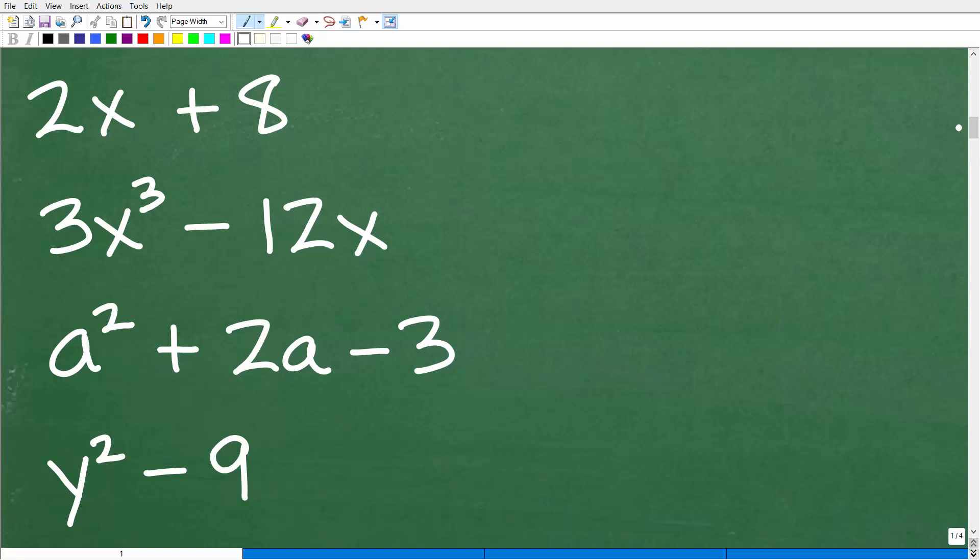This is just a quick little pop quiz to see if you can factor the following expressions. If you want to pause the video and do these real quick, this will take you all about maybe 45 seconds to factor. But let's go ahead and talk about how to factor this first thing right here. So we have 2x plus 8. We need to factor out the greatest common factors. So that would be 2 times x plus 4.